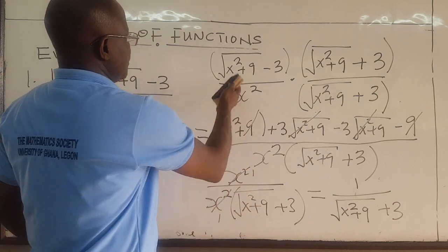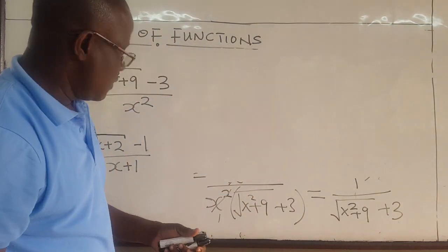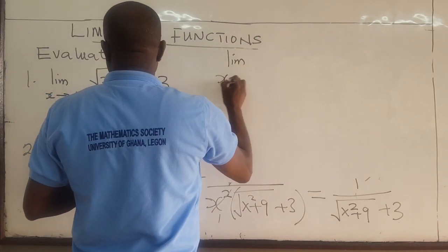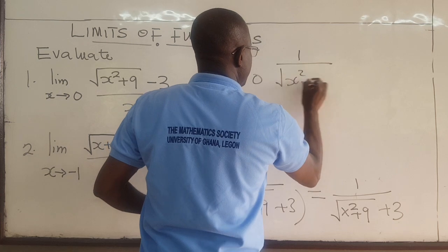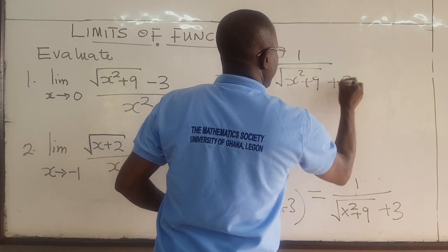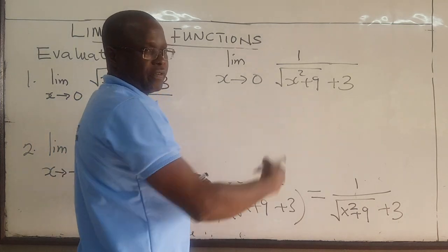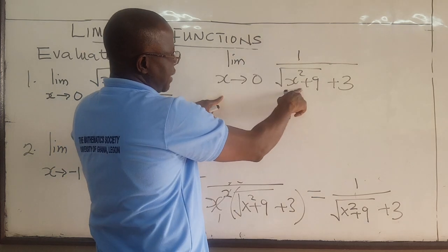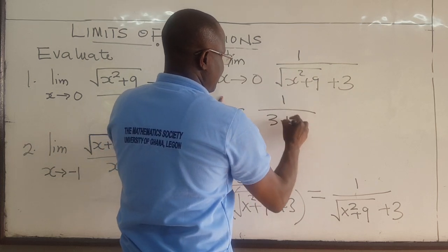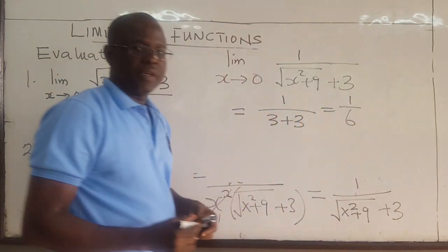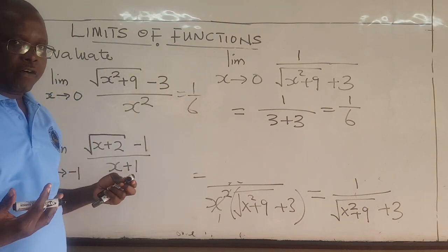So now we find the limit as x approaches 0 of 1 over the square root of x squared plus 9 plus 3. Putting in 0: 0 plus 9 is 9, the square root of 9 is 3, so we have 3 plus 3. That gives 1 over 6. So the limit as x approaches 0 of this expression is equal to 1 over 6.